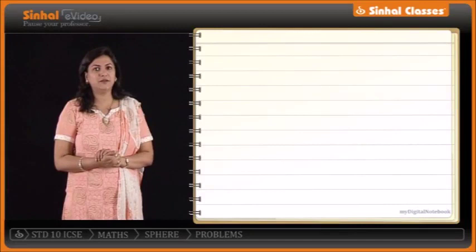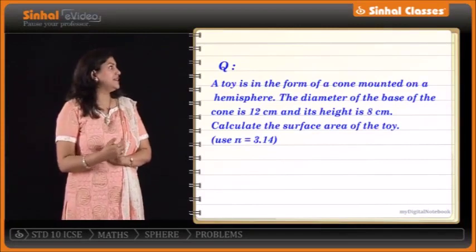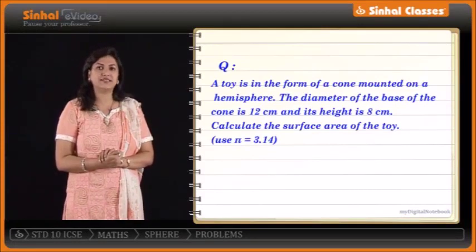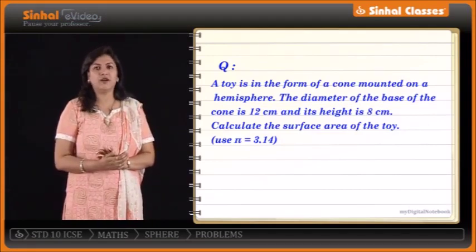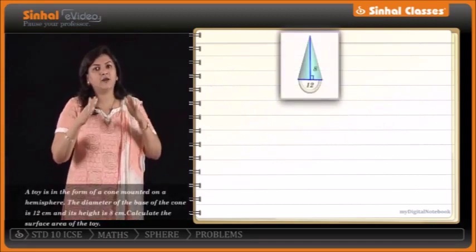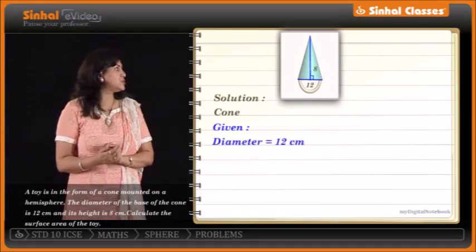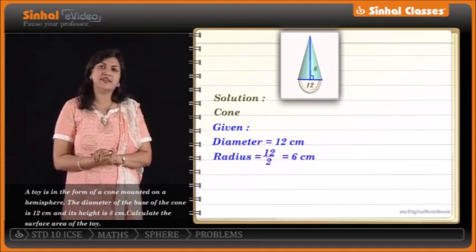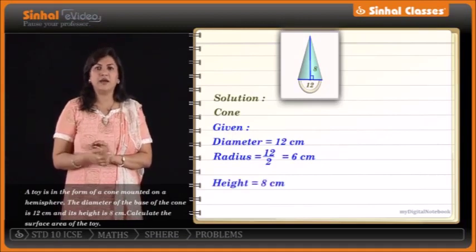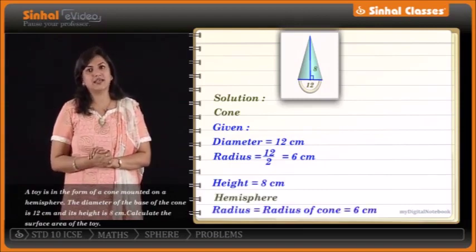The next problem: a toy is in the form of a cone mounted on a hemisphere. The diameter of the base of the cone is 12 cm and its height is 8 cm. So for the cone, radius = 6 cm and height = 8 cm. For the hemisphere, the radius is the same as the cone, also 6 cm.